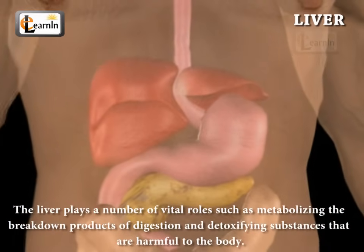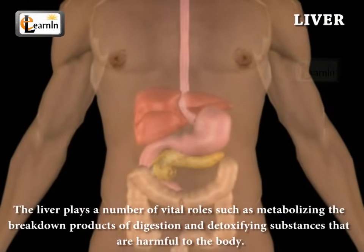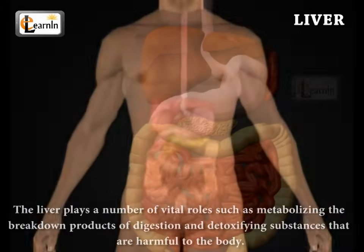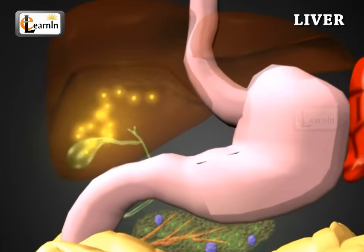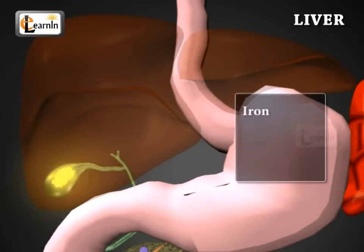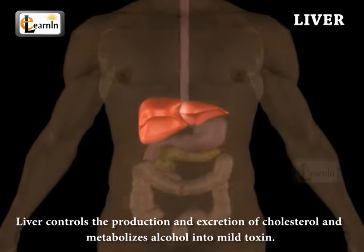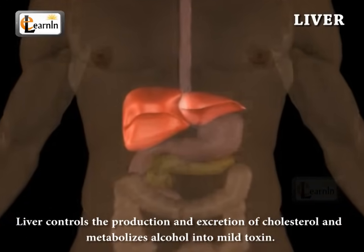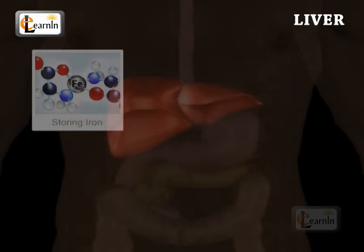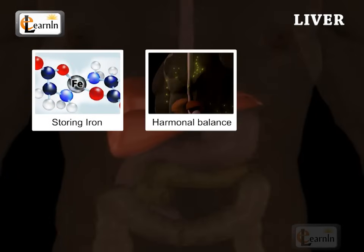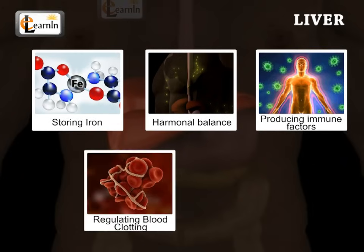The liver plays a number of vital roles, such as metabolizing the breakdown products of digestion and detoxifying substances that are harmful to the body. The liver also provides essential energy-producing substances and supplies vital vitamins including iron, vitamin B12, and copper. It controls the production and excretion of cholesterol and metabolizes alcohol into mild toxin. It also stores iron, maintains hormonal balance, produces immune factors to fight infections, regulates blood clotting, and produces bile.